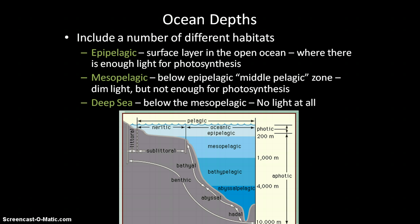There are different zones in the deep sea, but for our purposes, all of those different zones we are just going to lump into one term. The epipelagic zone, that surface layer of the water, is where there is enough light for photosynthesis to occur, so we call that the photic zone.